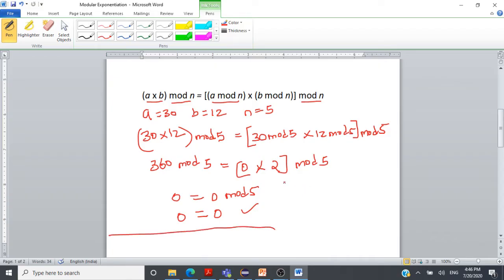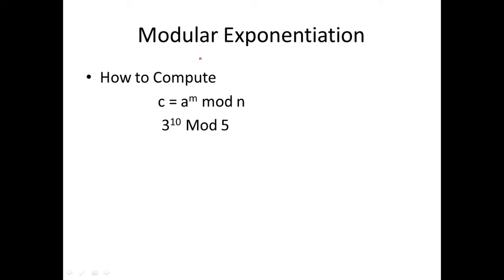We are going to use this multiplication property in the next topic: modular exponentiation. Modular exponentiation involves computing the value of an integer raised to the power m, divided by another positive integer n. For instance, we want to compute 3^10 mod 5, or even very large values like 3^200 mod 5. This is a trick to compute such large values easily.